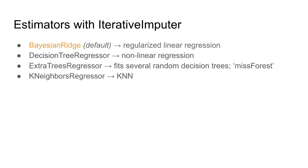The estimators — or regressors — that can be used with the iterative imputer are as follows. It's perfectly okay if you are not familiar with these since we'll cover them in future videos. The important point now is how to implement these methods to impute missing values. Bayesian Ridge is the default setting, highlighted in orange — it's a regularized linear regression that prevents overfitting by applying ridge regularization, even when there are many features.